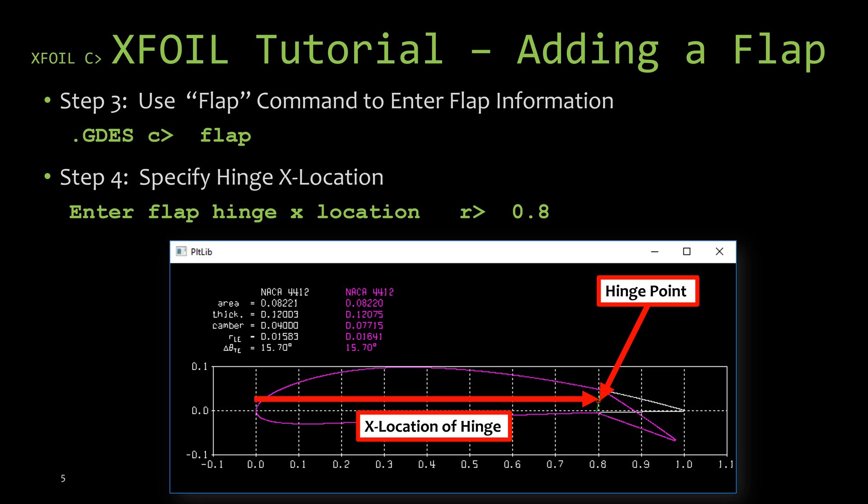It's not asking for a normalized x over the chord value. It's asking for the actual x-coordinate value. So if your airfoil is not normalized to one or it's rotated or moved about the coordinate plane, keep that in mind. Now for this example, I'm going to let the flap pivot at about 80 percent of the chord. And since I have a normalized airfoil where the leading edge is at zero zero and the trailing edge is at one zero, that means my x-location is going to be at 0.8 or 80 percent of the chord.